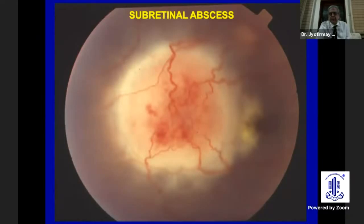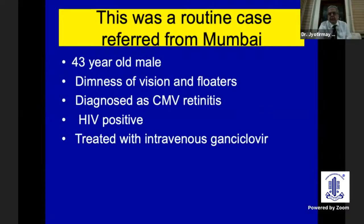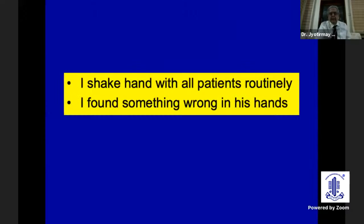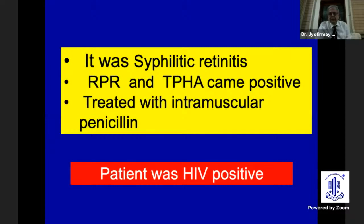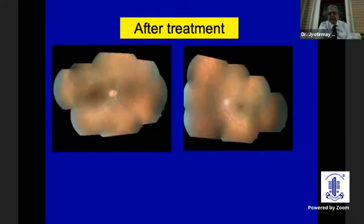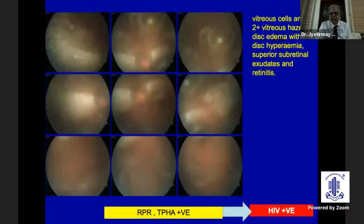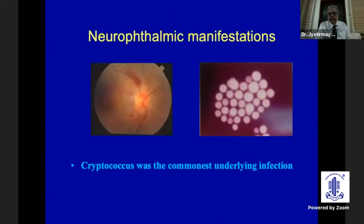I'd like to share a case: a 43-year-old male from Mumbai was diagnosed as CMV retinitis because he was HIV-positive — but not all HIV-positive patients have CMV retinitis. He was treated with intravenous ganciclovir. Before the COVID days, I used to shake hands with all my patients, and I found something wrong with his hand — there was a rash. This patient indeed had syphilitic retinitis with whitish-yellow subretinal deposits. He was RPR and TPHA positive, treated with intramuscular penicillin, and showed excellent resolution of inflammation. We are now seeing more syphilis cases in HIV-positive patients, and one can also have vitritis with retinal vasculitis in syphilis.